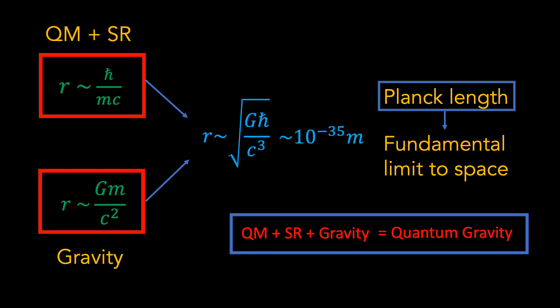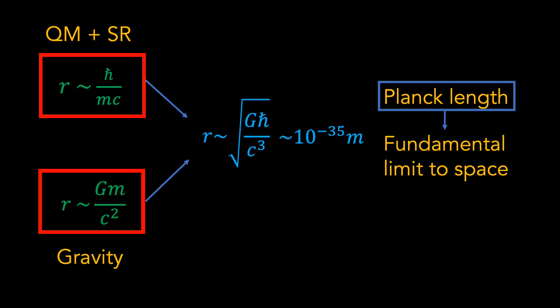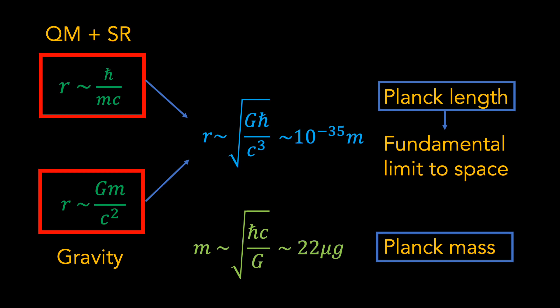We can also calculate how much mass must be squeezed into this minuscule volume for the black hole to form. Rearranging the equation for the Schwarzschild radius, we find that m is roughly equal to the square root of Planck's constant multiplied by the speed of light divided by the gravitational constant. This mass is referred to as the Planck mass and has a value of roughly 22 micrograms, which is roughly the mass of a flea egg. So it is rather fascinating to reflect that the fundamental limit of space itself is revealed by squeezing a flea egg's worth of mass into a space of length 10 to the minus 35 metres, causing the formation of a black hole.